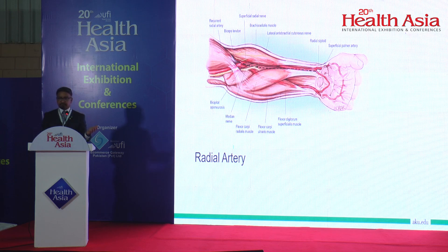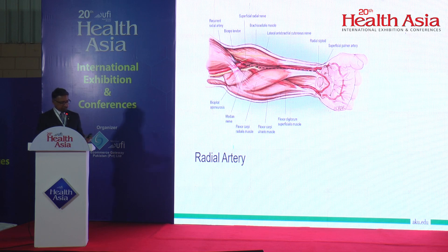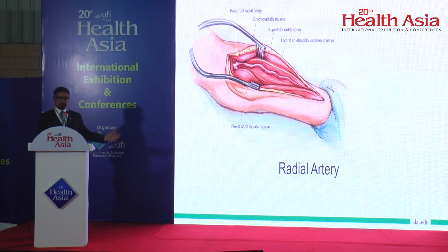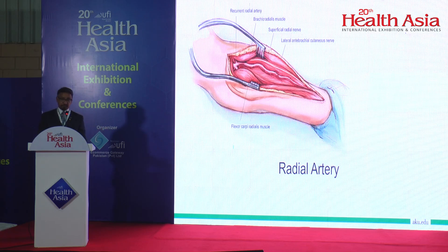We use titanium clips to clip all branches. We don't skeletonize the radial artery too much; we harvest it with the venae comitantes around it along the entire length, which is good enough to reach the PDA or PLV if doing it directly.